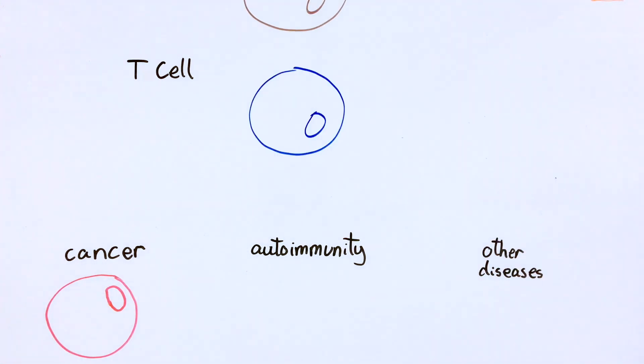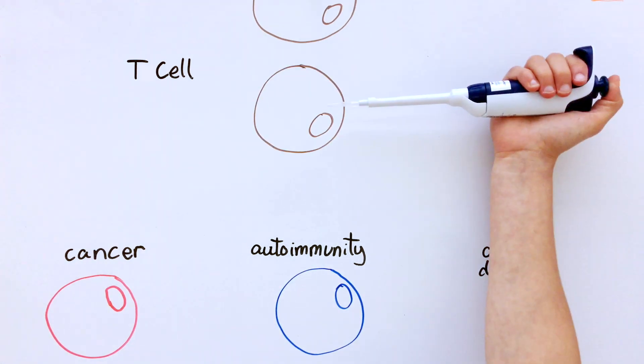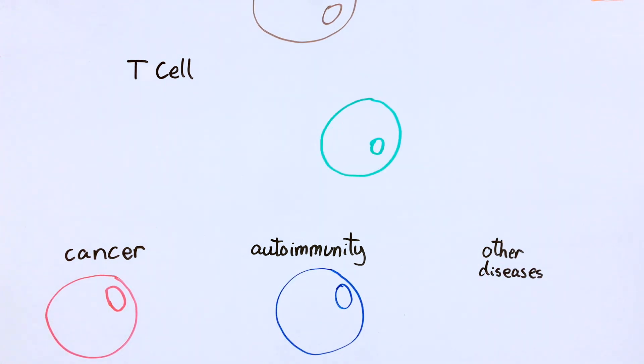Now, scientists in Alex Marson's lab at UCSF have found a unique way to reprogram human T-cells with CRISPR technology. Their new strategy is faster and cheaper than ever before, opening the door to treating cancer, autoimmunity, and other diseases.